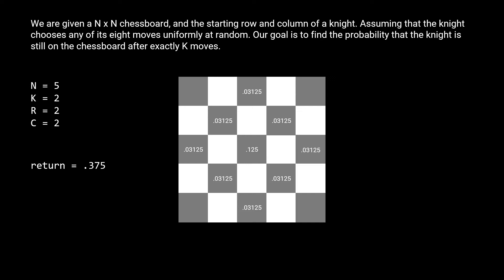Our original question was after the two moves, what is the probability that the knight is still on the five by five grid. So we just have to sum all these probabilities to get 0.3750, which is the answer we would return.